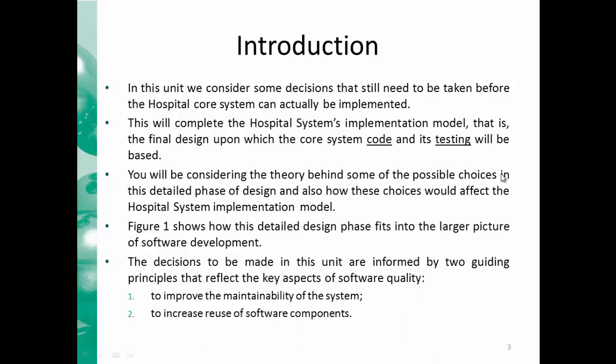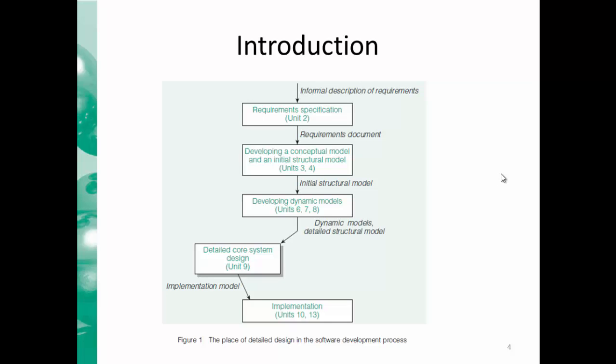In this unit, we will complete the hospital system's implementation model so it will be ready for coding and testing. We will take some decisions, and these decisions will help us implementing the system. The guideline for taking these decisions will be the main principles concerning software quality, which are to improve the maintainability of the system and to increase the use of software components. In this figure, you see the relation between our chapters and today we are in the detailed core system design in unit 9.